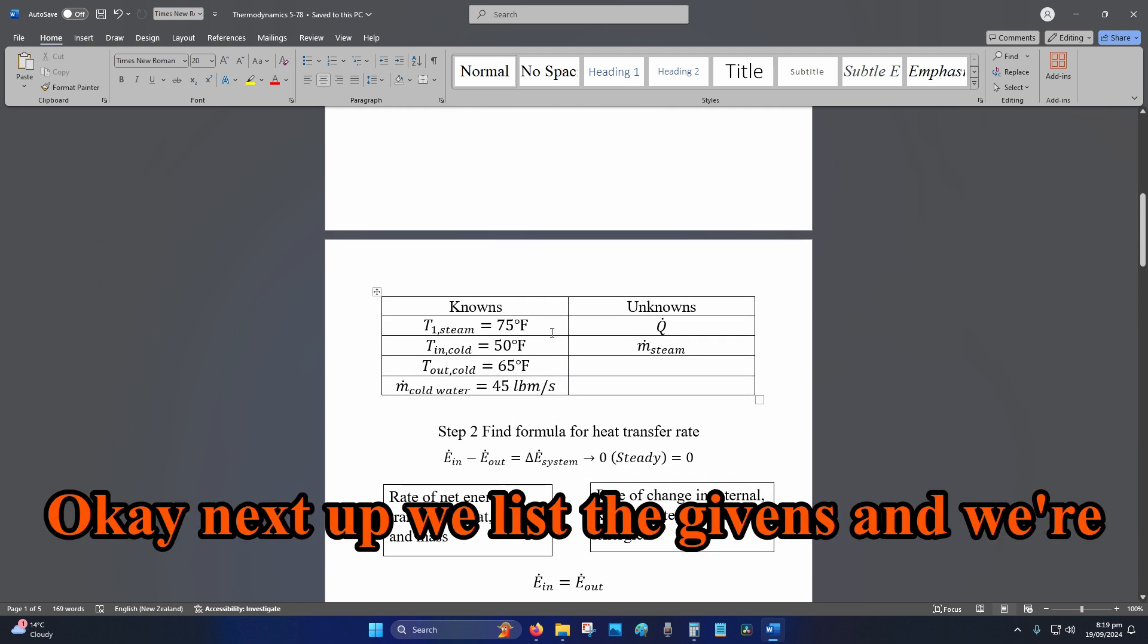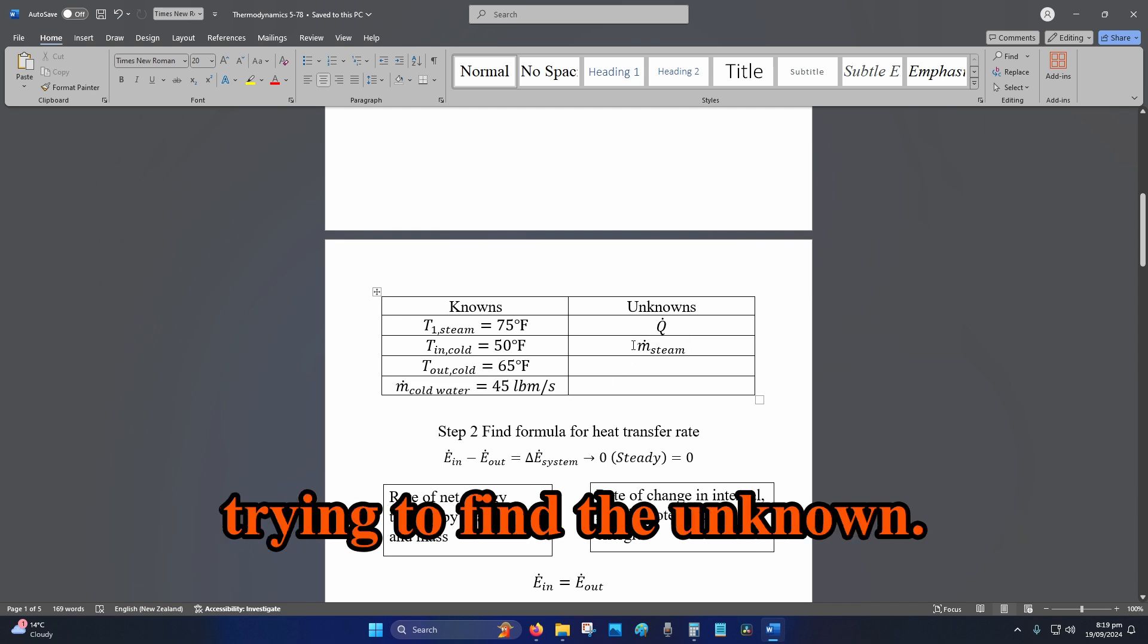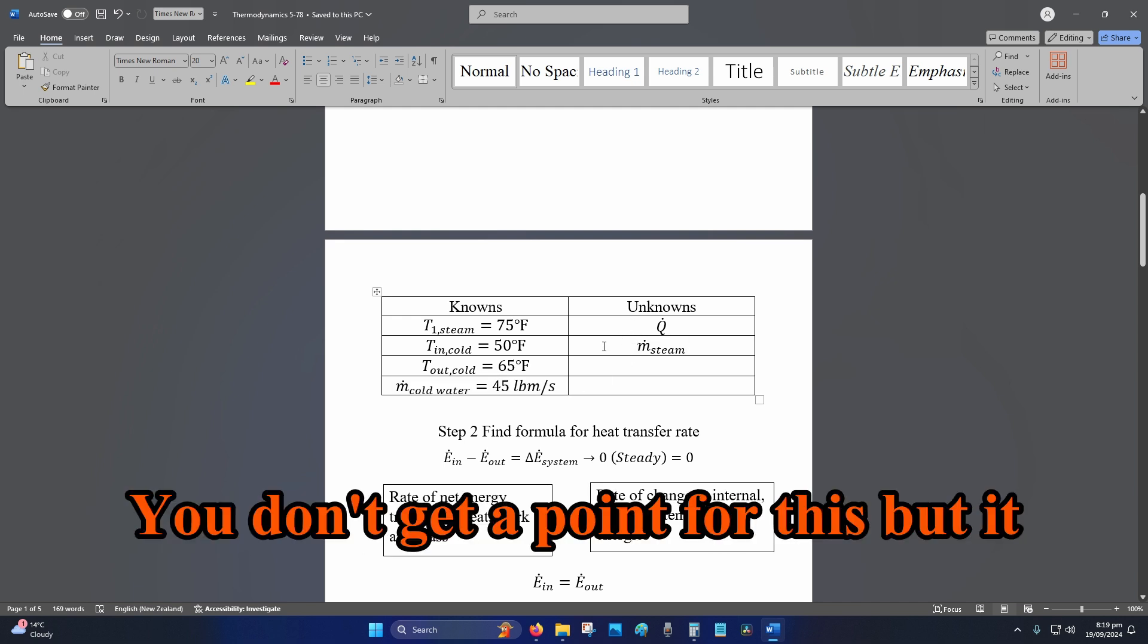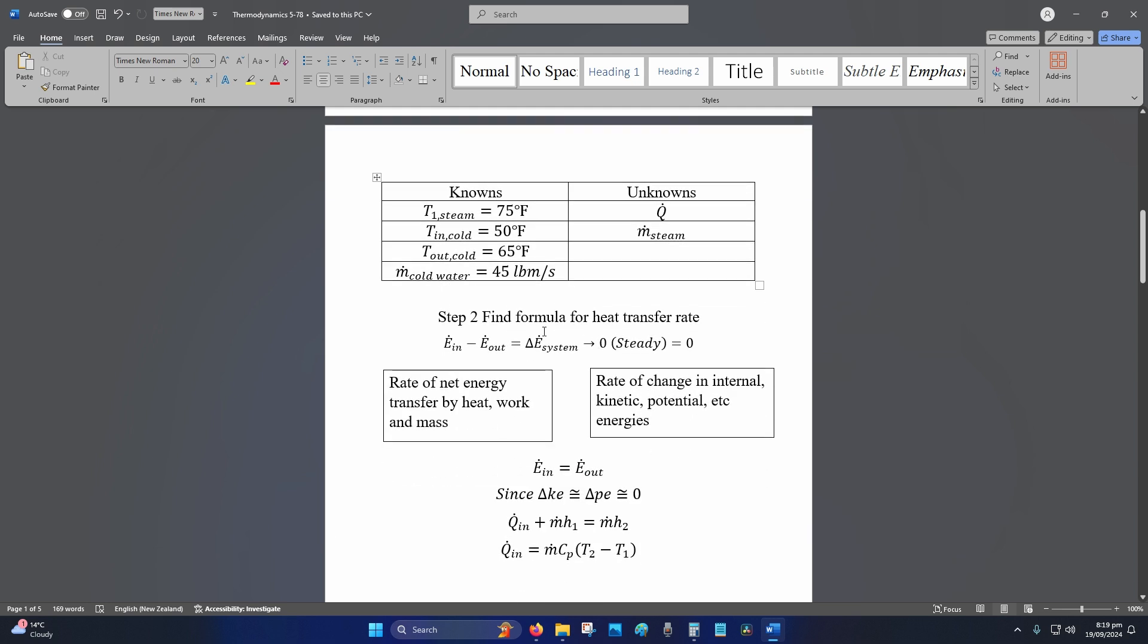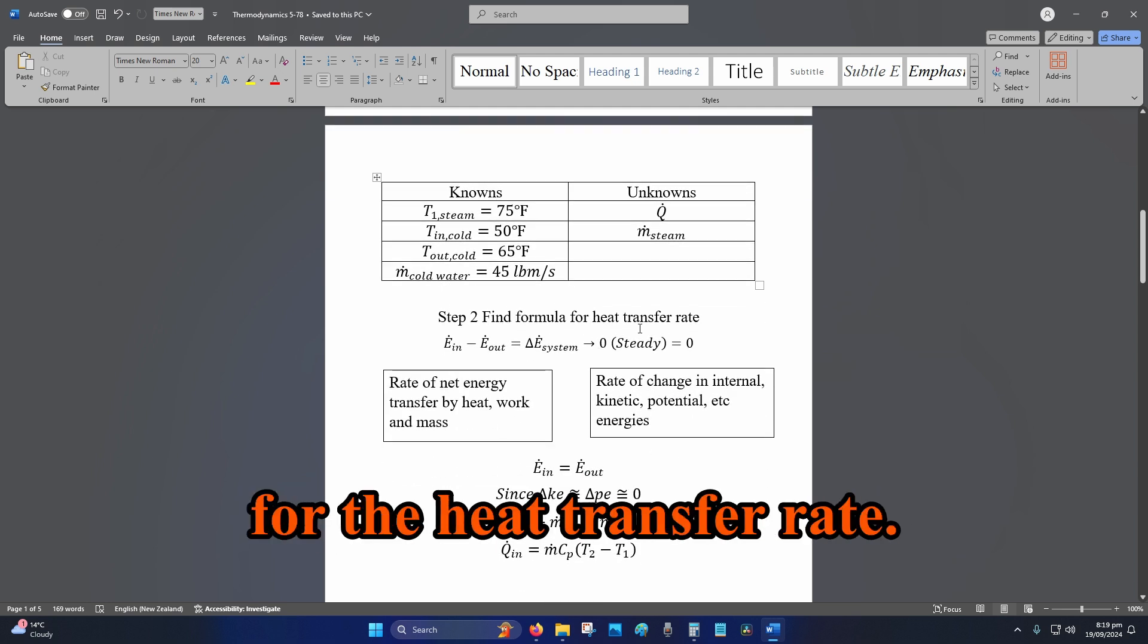Okay, next up we list the givens and we're trying to find the unknown. You don't get a point for this but it helps with the formula or finding the formula. Step two, find the formula for the heat transfer rate.